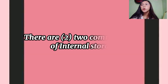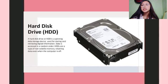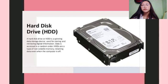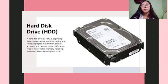There are 2 common types of internal storage. Number 1 is Hard Disk Drive, or HDD. It is a spinning data storage device used for storing and retrieving digital information. Data is accessed in a random order. HDDs are a type of non-volatile memory, retaining data even when the computer is off.